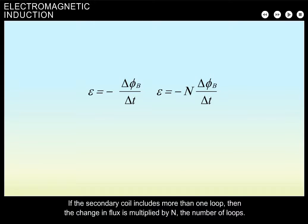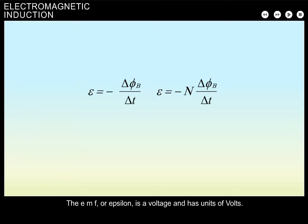If the secondary coil includes more than one loop, then the change in flux is multiplied by N, the number of loops. The EMF, or epsilon, is a voltage and has units of volts.